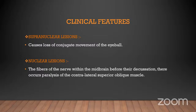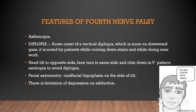Clinical features: a supranuclear lesion causes loss of conjugate movement of the eyeball. A nuclear lesion — involving fibers within the midbrain before their crossing — causes paralysis of the contralateral superior oblique muscle. Presenting features include asthenopia and diplopia: acute onset vertical diplopia, worse on downward gaze, noticed while going downstairs or doing near work. There is head tilt to the opposite side, chin-down posture, and V-pattern esotropia to avoid diplopia.